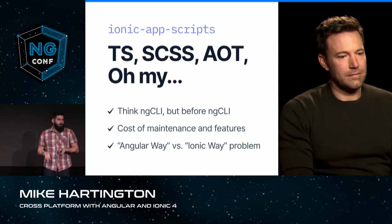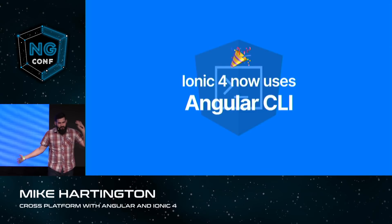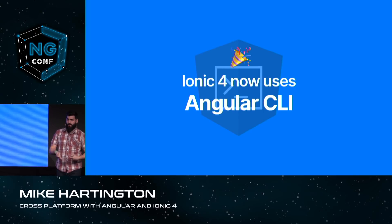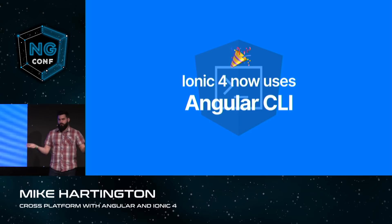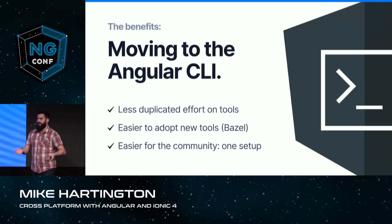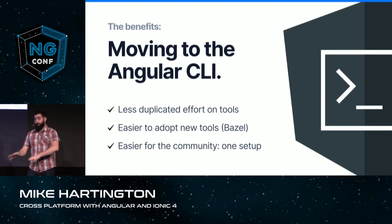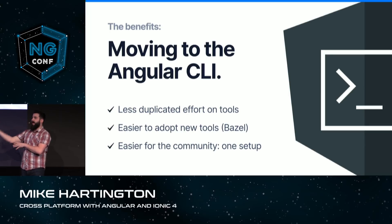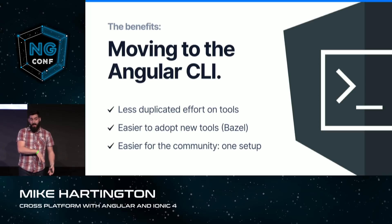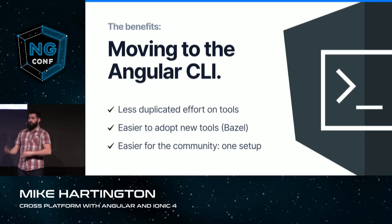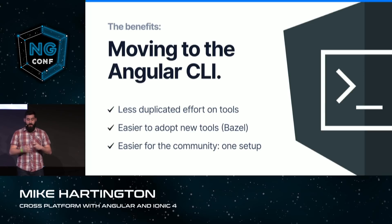I hope you can see where we're going with this — we moved over to the Angular CLI. It really simplifies all the dependencies we need to worry about in Ionic, but also is easier for users because now we just have one setup for building our apps. If you wonder about an option in the Angular CLI, it automatically applies to an Ionic app. When Bazel comes out, we can adopt that feature without having to recreate it specifically for Ionic apps. One setup — really great.